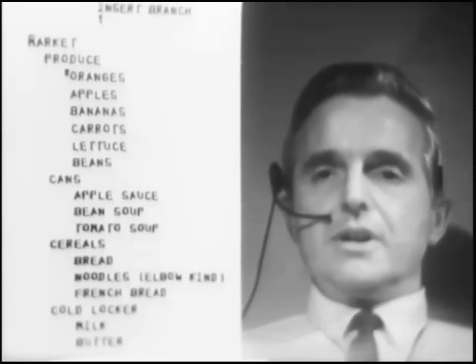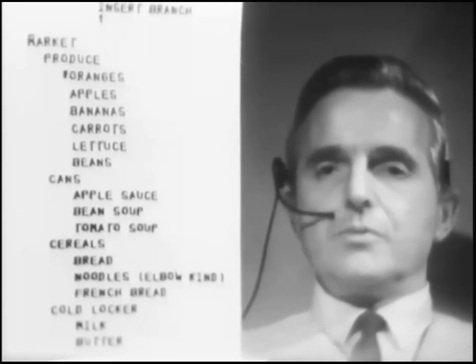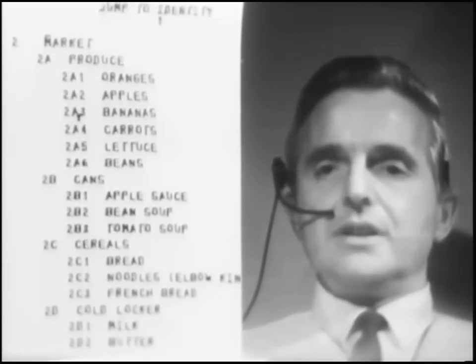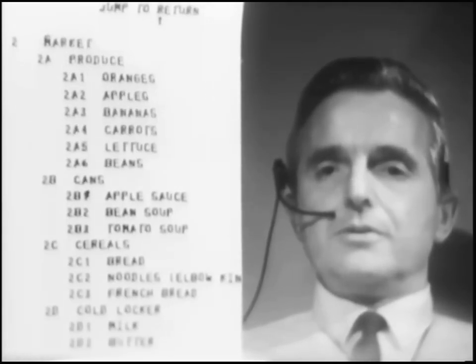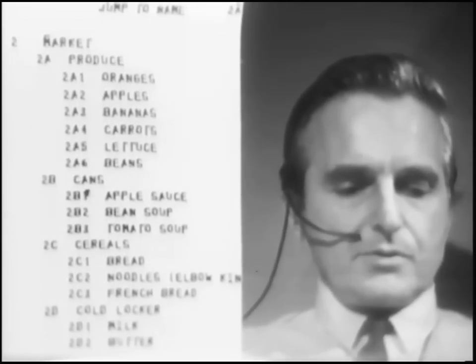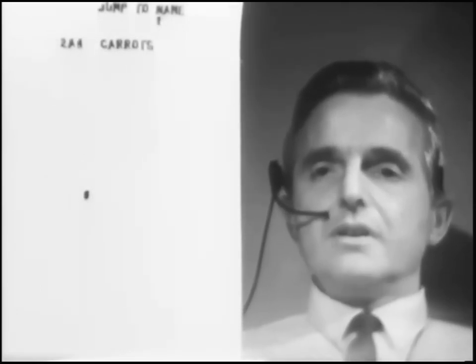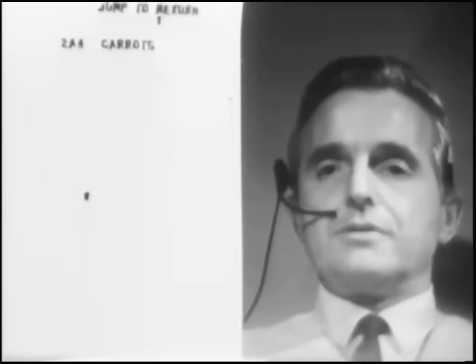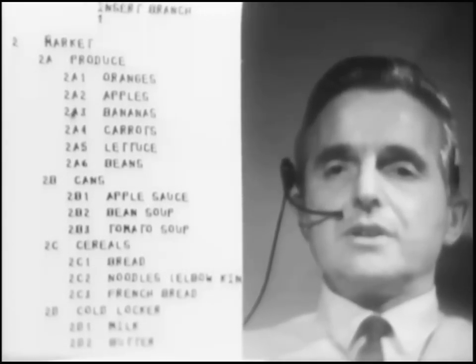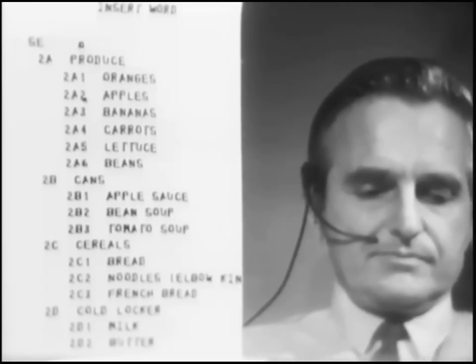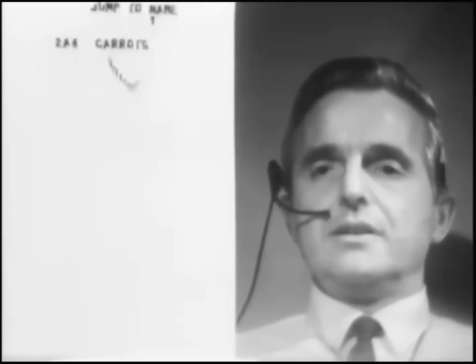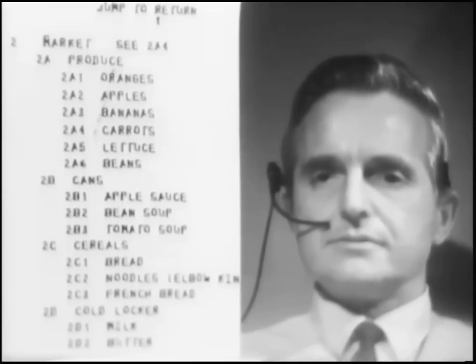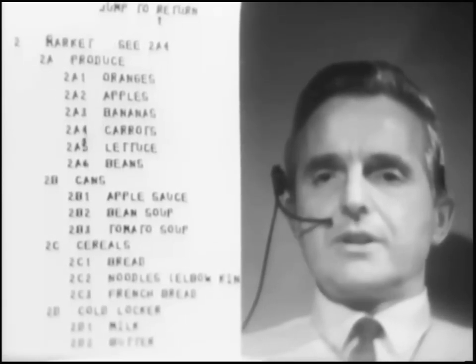One interesting thing here that I haven't told you about is that when the numbers are on, I can do something like say, instead of jump to identity and pointing to that and having it bring to the top, I can say jump to a name and say go to 2A4. And it'll do it. So I can jump to a location number just by giving it. Or if I wish, I can add it as text in there and say jump to name and just point to that. Carrots — right — 2A4. So I gave it the name of that and go to it.